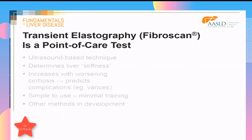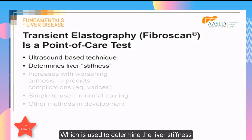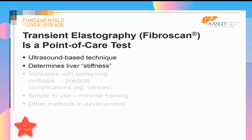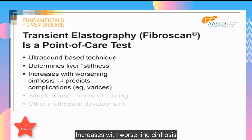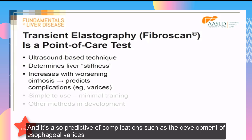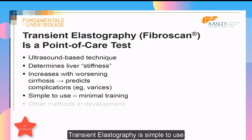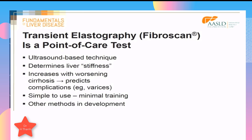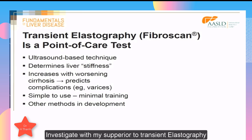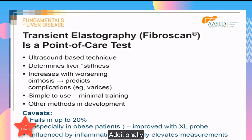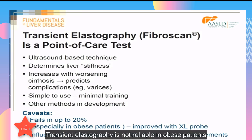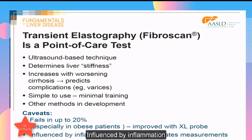Transient elastography is a point-of-care, ultrasound-based technique used to determine liver stiffness. Liver stiffness increases with worsening cirrhosis and is also predictive of complications such as the development of esophageal varices. Transient elastography is simple to use, though several newer methods are being investigated that might be superior. Additionally, transient elastography is not reliable in obese patients and is influenced by inflammation.